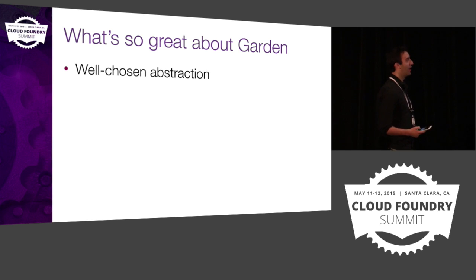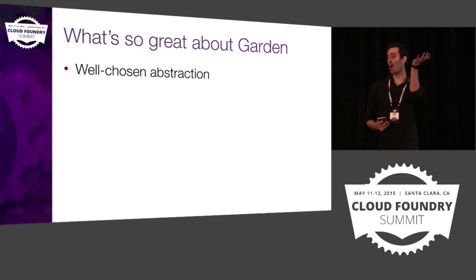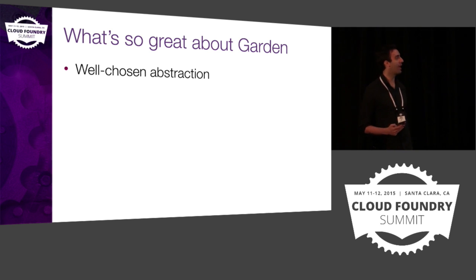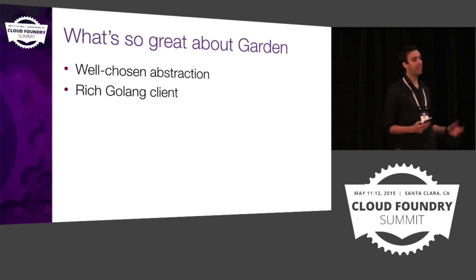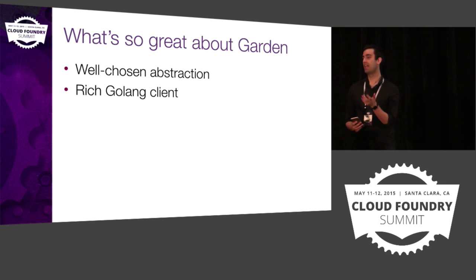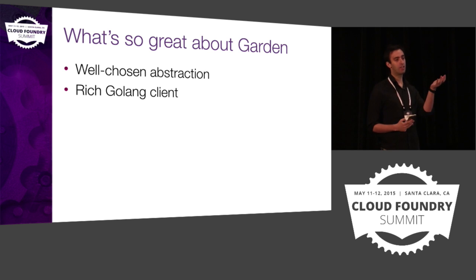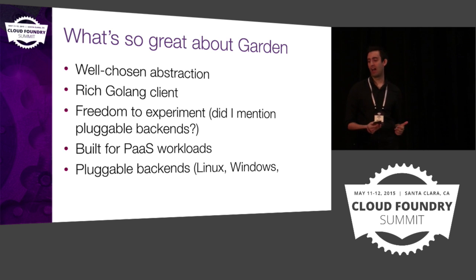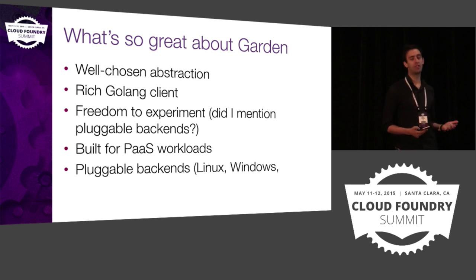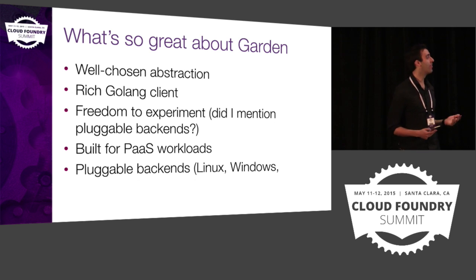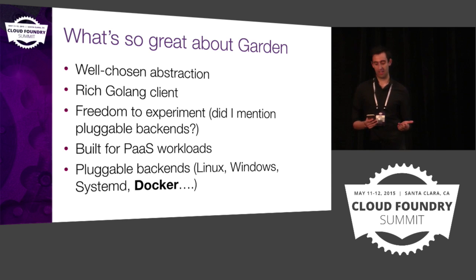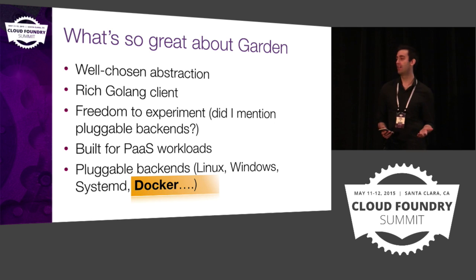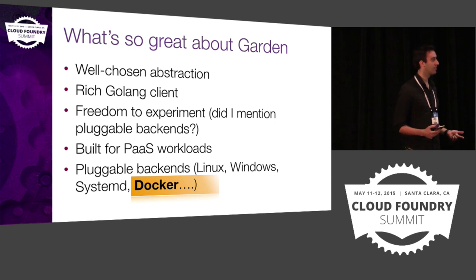What's so great about Garden? It's got really great abstraction — because we've got a high-level, simple abstraction, you can plug in multiple backends. Therefore we've got a Windows backend and we're able to do experimentation. Secondly, it's got a Go client — the Go client is the first-class citizen, built for building containers with. If you're building a container, what you want is Go code that says create me this, run this — especially if your platform is built on Go. Freedom to experiment because we can put in multiple pluggable backends. We already have Linux and Windows, and you could actually run Docker as well.